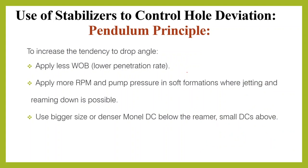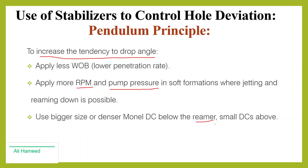To increase the tendency to drop angle: apply less weight on bit — this gives a lower penetration rate but avoids building angle. Apply more RPM and pump pressure in soft formations where jetting and reaming down is possible, as jetting helps drill faster with low weight on bit. Use bigger-size or dinosaur drill collars below the stabilizer and smaller drill collars above the stabilizer. This achieves more deflection below the stabilizer toward the low side, and more deflection above, resulting in a higher drop rate during drilling.